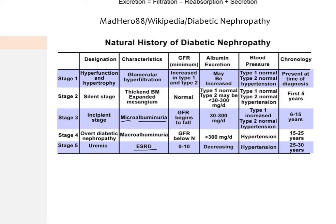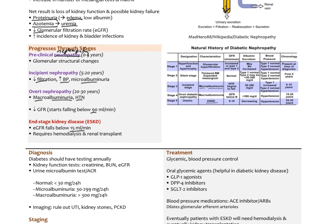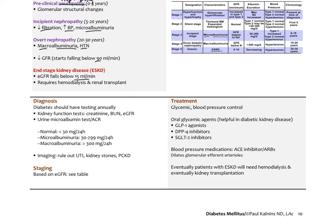That's the natural history of diabetic nephropathy — it occurs over decades, and we should be preventing it by controlling blood sugar levels. For diagnosis, diabetics should have testing done annually. We test kidney function on a complete metabolic panel looking at creatinine, BUN, and the calculated GFR. We also order the urine microalbumin test — the albumin creatinine ratio, or ACR. A normal level is under 30 milligrams in a 24-hour period, but the ACR is a spot test — you don't need to do a 24-hour collection.